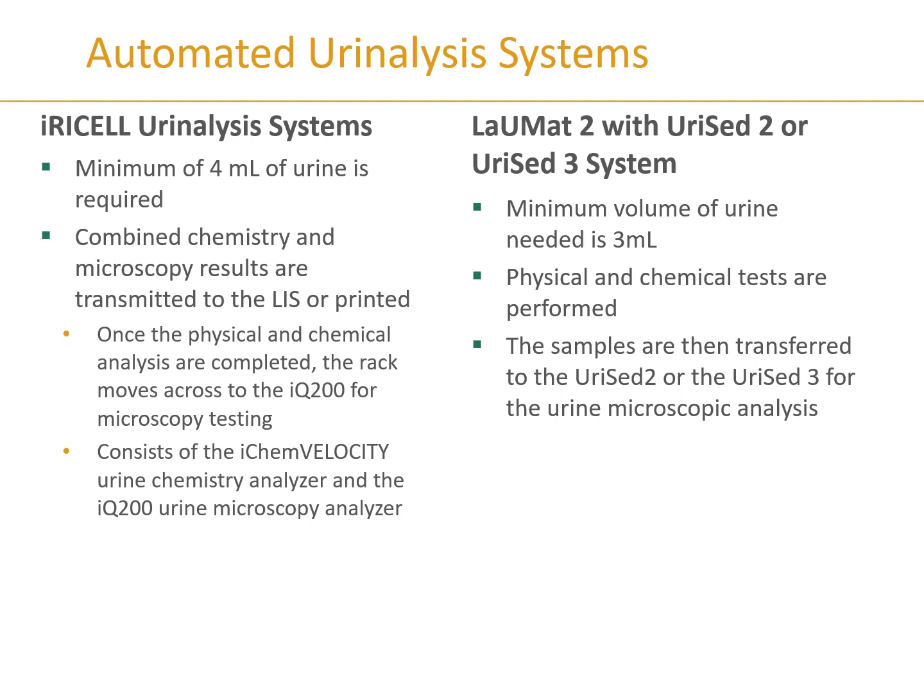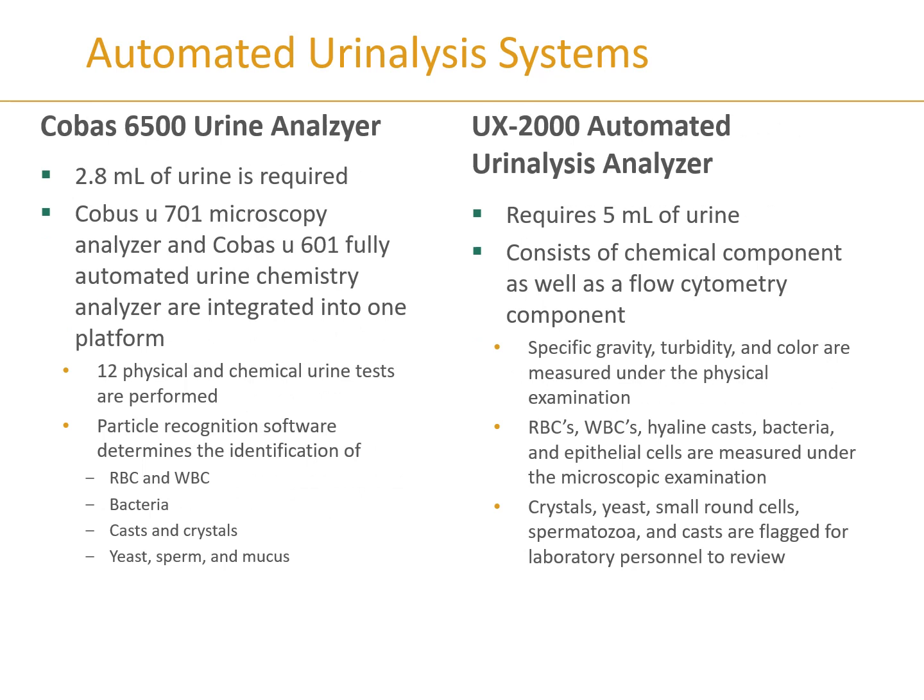The LAU mat requires a minimum volume of three mLs. These automated analyzers with smaller volume requirements are particularly useful for pediatric samples, especially infants from whom only a few mLs can be collected. The COBAS analyzer requires less than three mLs. The Sanalyzer 2 is a fully automated system that includes microscopy as well as physical and chemical components. The UX2000 requires five mLs and performs chemical analysis as well as flow cytometry, checking for color, turbidity, and categorizing cells.